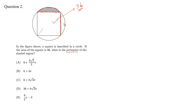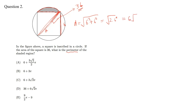Now, this diagonal is the diameter of the circle. We can calculate it: the diameter D equals the square root of 6 squared plus 6 squared, which equals the square root of 2 times 6 squared, giving 6 times the square root of 2. The radius will be half of this, equal to 3 times the square root of 2.